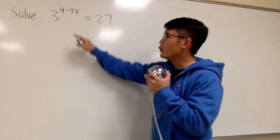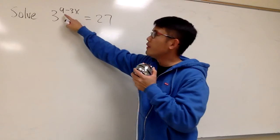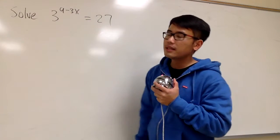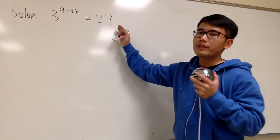Here we're going to solve this equation. We have 3 raised to the power of 9 minus 3x. And you see the x is in the exponent right here. And this is equal to 27.